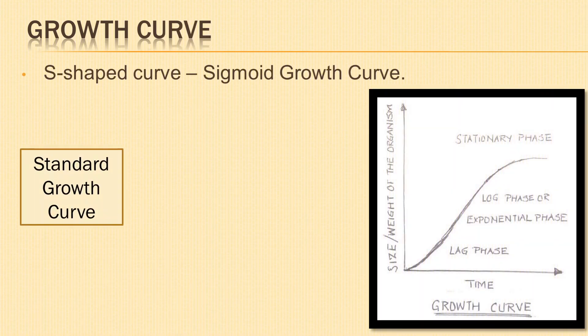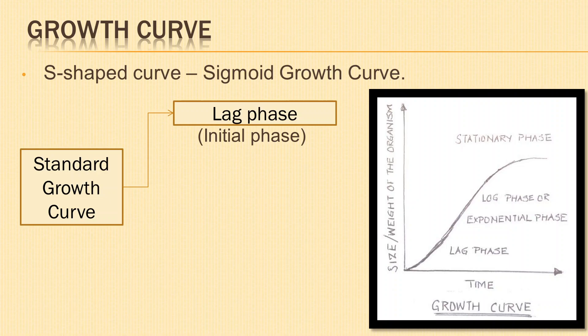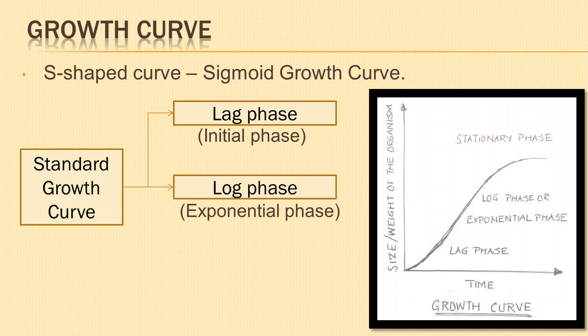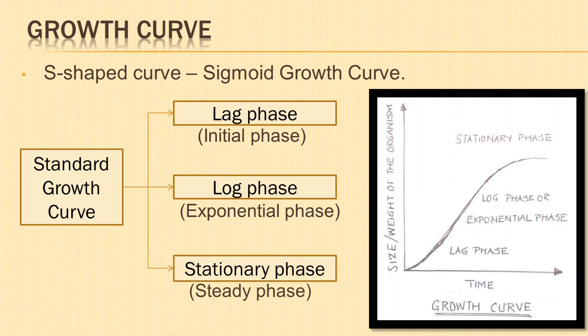Next is growth curve. When the rate of growth is plotted against time, an S-shaped curve is obtained known as sigmoid growth curve. The standard growth curve shows three phases. Lag phase or initial growth phase — the rate of growth is slow and it corresponds to the formative phase. Log phase or exponential phase — rapid growth takes place and it corresponds to the phase of cell elongation. Steady phase or stationary phase — the growth rate slows down and cell differentiation takes place.